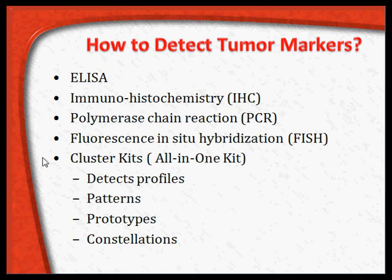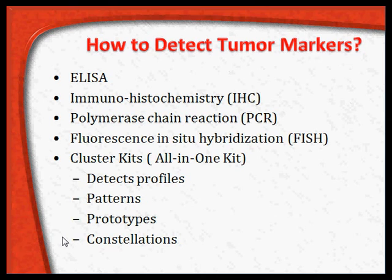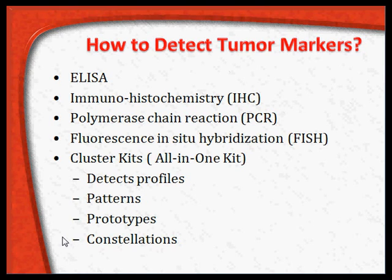There are sometimes what are called cluster kits or all-in-one kits, which have some profiles, patterns, prototypes, and constellations. Depending on this all-in-one kit, we can say a particular patient shows this profile and pattern, and falls into this prototype or constellation — indicating the area to look into is probably the liver, ovary, or uterus.